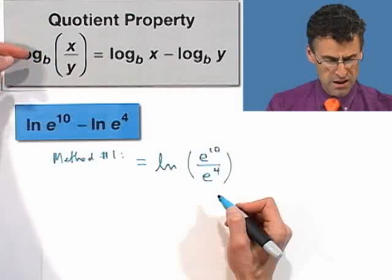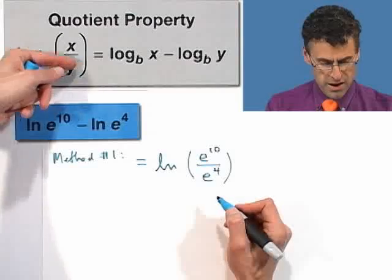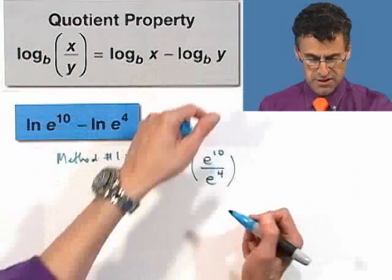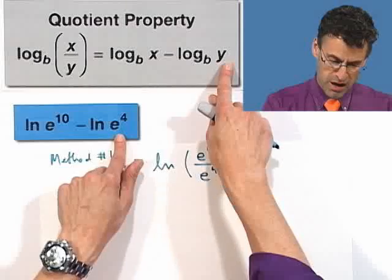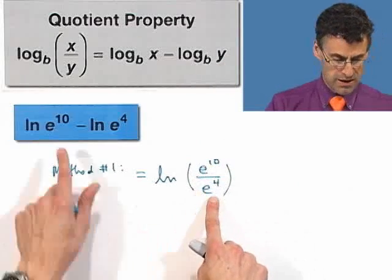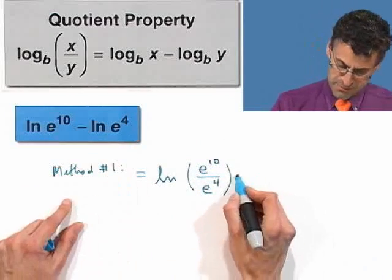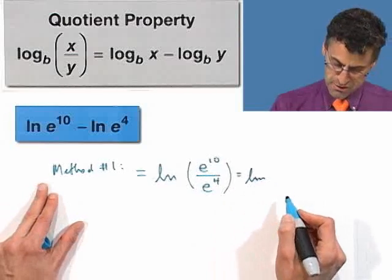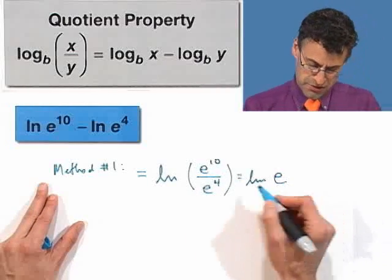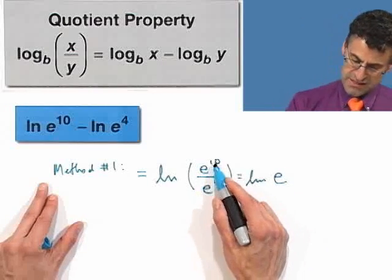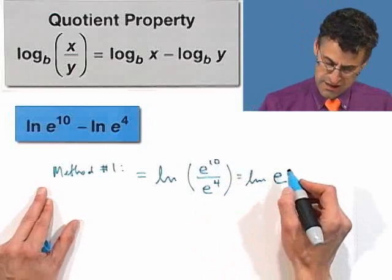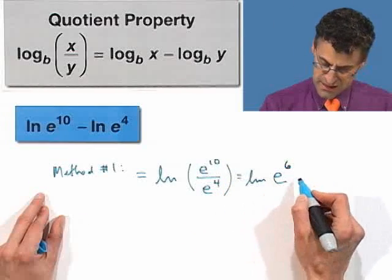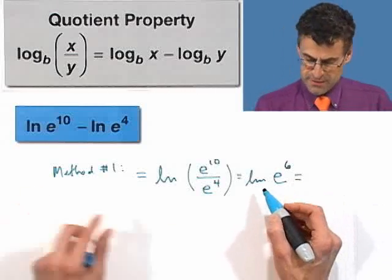So method 1 is to say this equals the natural log of the quotient e to the 10th divided by e to the 4th because that's the rule, right? The natural log of x over y equals natural log of x minus natural log of y. So natural log of x minus natural log of y equals natural log of x divided by y, which is that divided by that. Now you can simplify natural log of e to the, well, if I have 10 e's on top and 4 e's on the bottom, what do I do? Well, you subtract the exponents, and so I see e to the 6th.